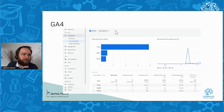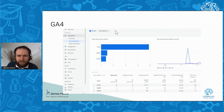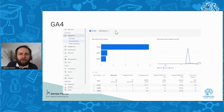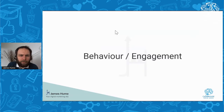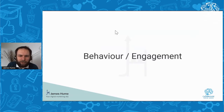In Google Analytics 4 they've spruced it up with some nice charts, but essentially you've still got that source/medium view where you can see where people are coming from, and then see how they engage with your site when they get there.